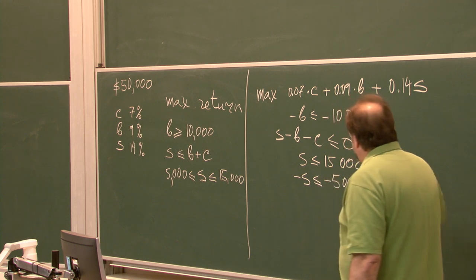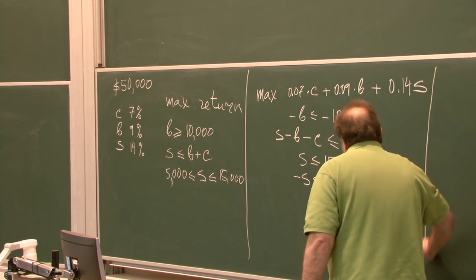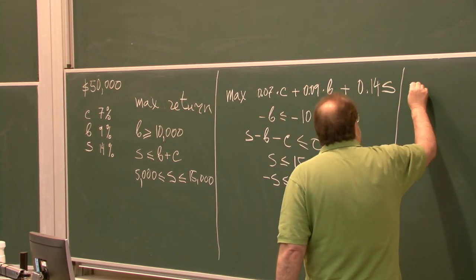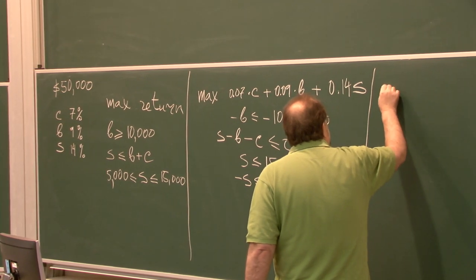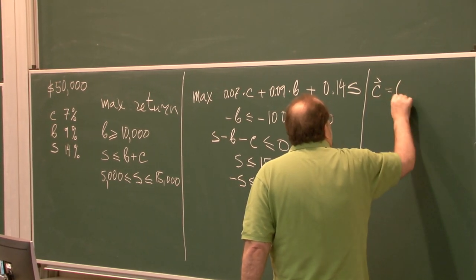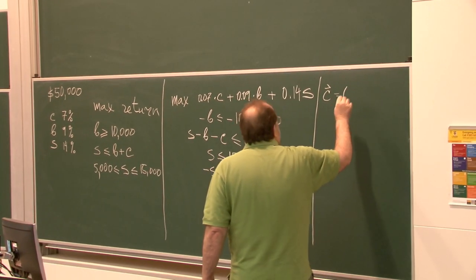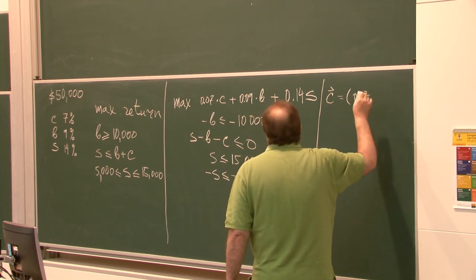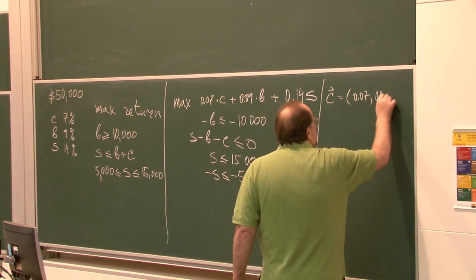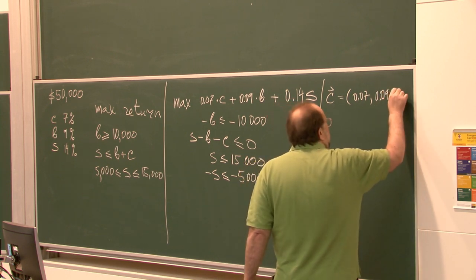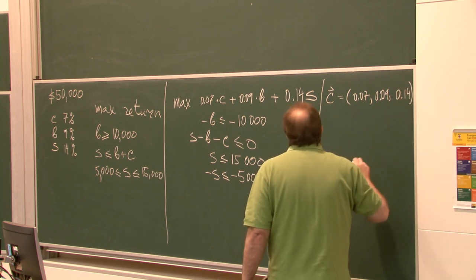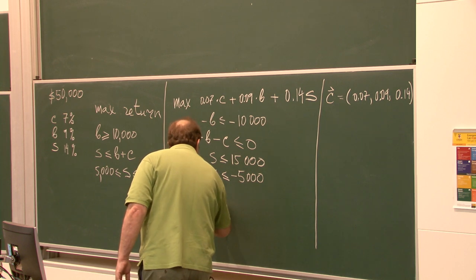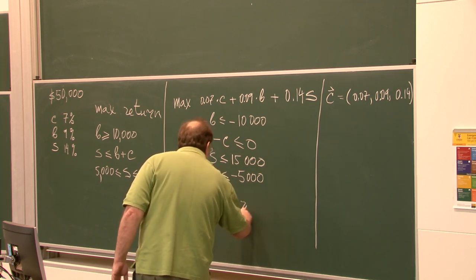Your software package wants to see the vector of coefficients, usually denoted C, which is [0.07, 0.09, 0.14]. We also require S ≥ 0, B ≥ 0, and C ≥ 0.